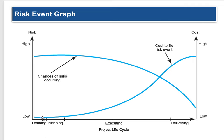Looking at the risk event graph: the bottom axis is time/process — the project life cycle. You start by defining, then executing, then hopefully delivering. Your risk in terms of cost is very low to start — you don't have a lot of money invested — but as you start executing, expenses go up, and when you begin to deliver, the cost goes up further. The risks are also tied directly to how much money you've got in the game. The chances of risks occurring are much higher when you don't have a lot fleshed out. While costs go up over time, risks start really high, and if you're doing systematic planning, your risk goes down over time. It's never really zero, but it does go down.